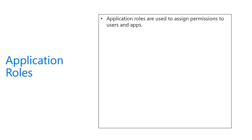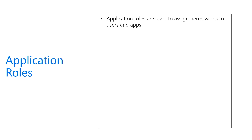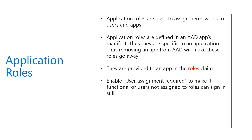Application roles are used to assign users to a specific set of functionality in your applications. They are defined in the Azure Active Directory Application Manifest, so they are specific to just a single application. Removing the app in AAD will actually remove those roles as well. If you use roles for your application assignments, those roles will show up as a claim in your access tokens and ID tokens. You have to enable user assignment to make it functional, so you can actually assign users to those roles.